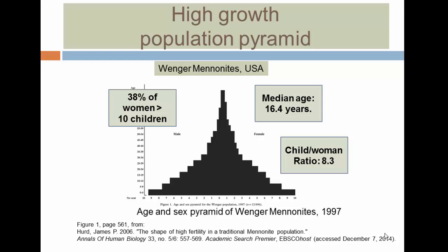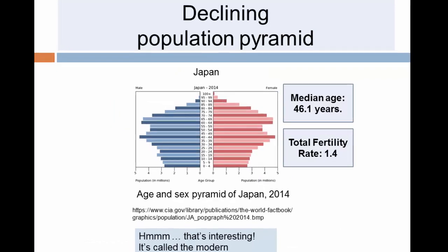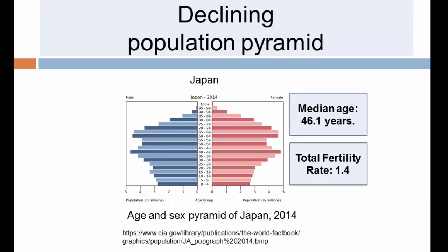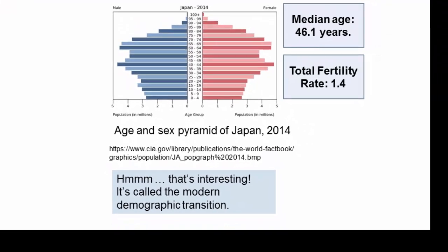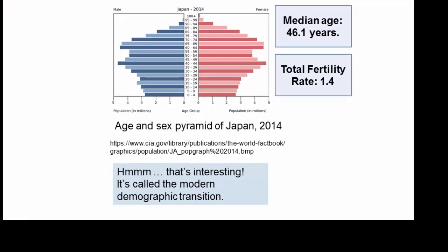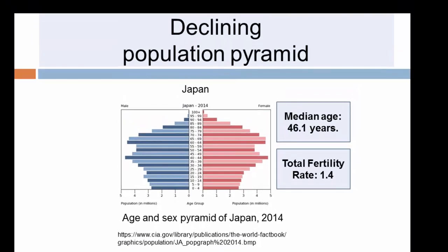Only four percent of the Mennonite population is over 65, and again this has nothing to do with mortality — it has to do with fertility. We can contrast this to contemporary Japan, where the median age is 46 years. Japan's total fertility rate is 1.4, which is below replacement, showing a declining population. How can we explain that? It's called the modern demographic transition, and we'll be looking at it next.